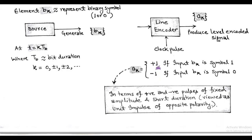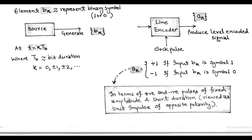The encoded output a_k is +1 if the input b_k is symbol 1, and −1 if the input b_k is symbol 0. This level encoded signal is represented in terms of positive and negative pulses of fixed amplitude but having short duration.